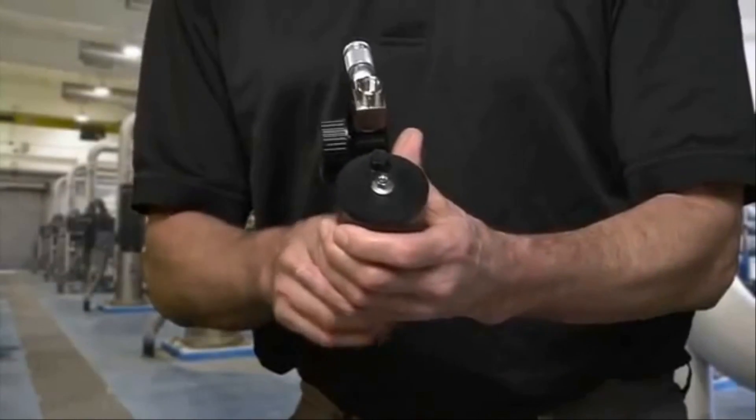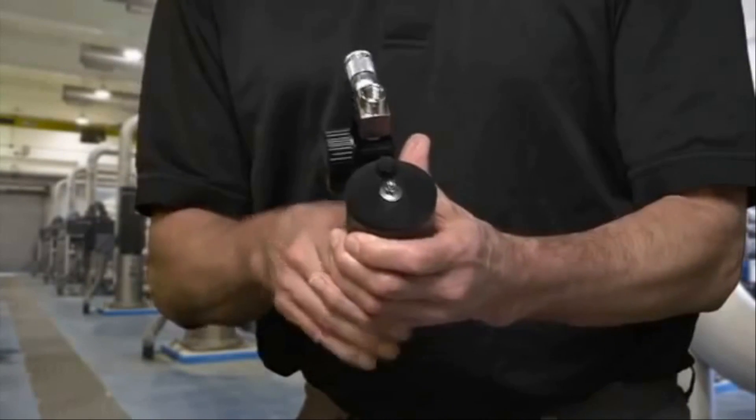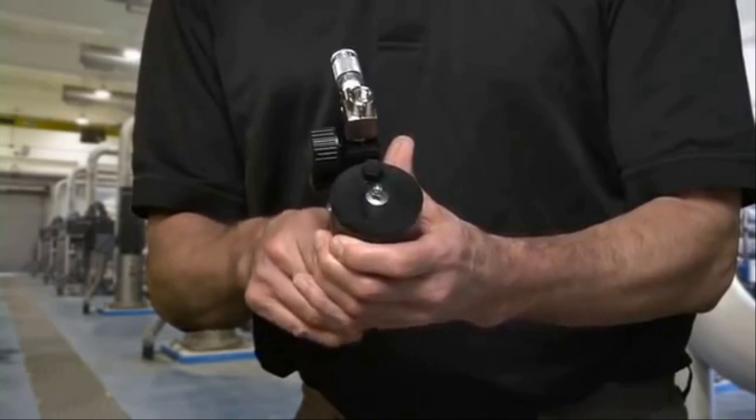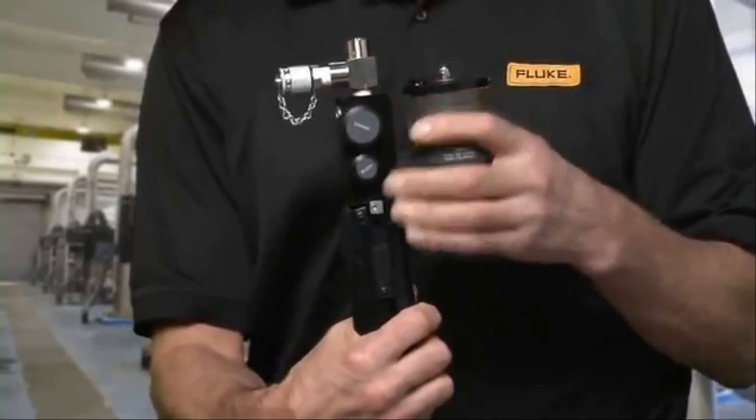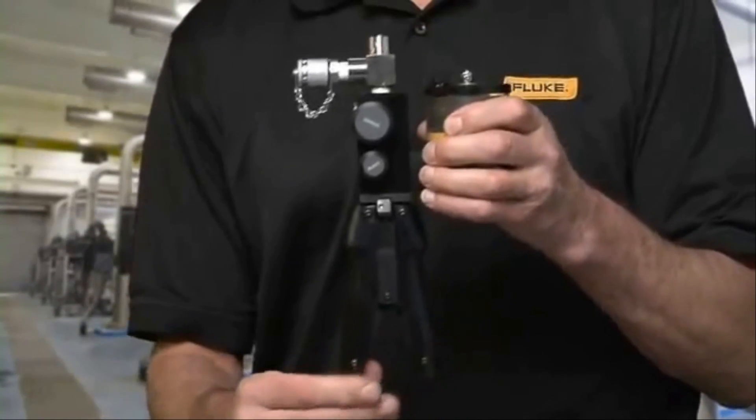Prime the pump by squeezing the pump handles until fluid appears out of the gauge port. Once the pump is primed, press the handles together again, then push the handle limiting button for normal operation.